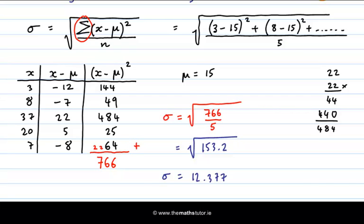So we've taken our deviations, we've squared them, we've got the sum of those, and we've divided by the number of them. So in other words, inside the square root sign, we get the mean of the squared deviations. We add them up and divide by the number of them.